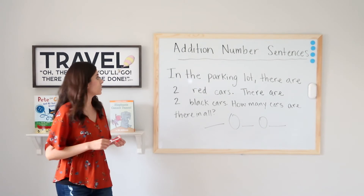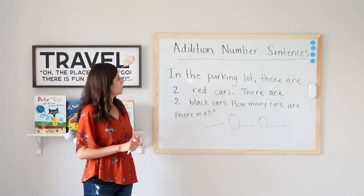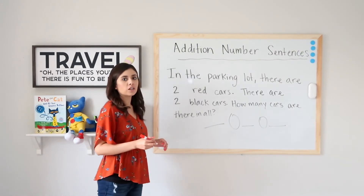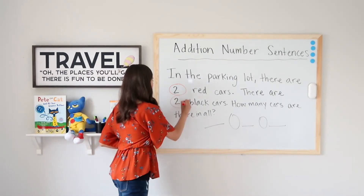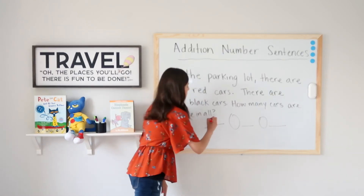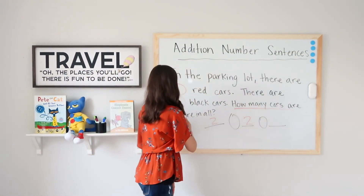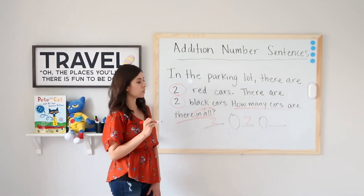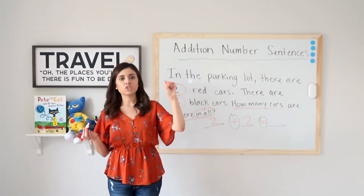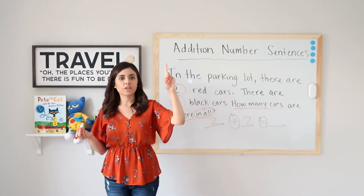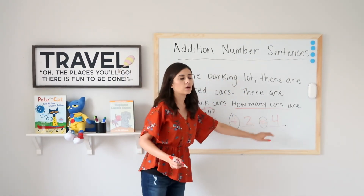In the parking lot there are two red cars and two black cars. How many cars are there in all? I circle two red cars and two black cars, then write our two parts. In all means to add, so I put my plus sign. Two plus two: hold a fist at two and jump up two more — two, three, four. Four is the sum of two plus two; two plus two equals four — it is the same value.